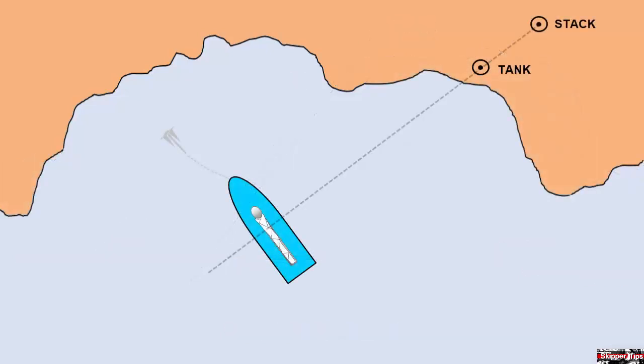Set up drag bearings with transits to tell if your anchor is holding. As soon as you lower and set the anchor, find two objects that line up off the beam. As long as those two objects stay in line, you know your anchor is holding. If the objects begin to separate, this could indicate that the anchor is dragging along the seabed.